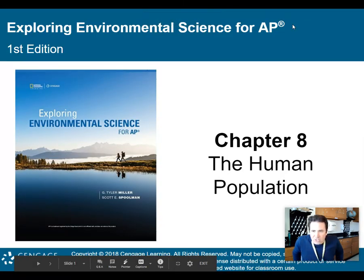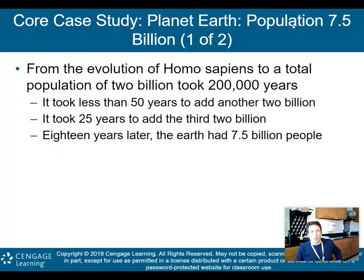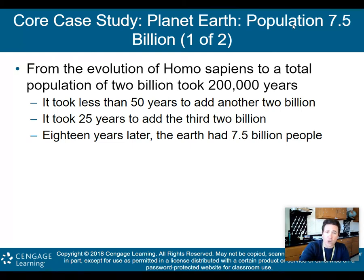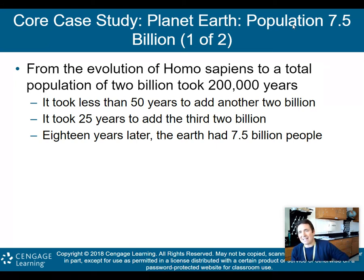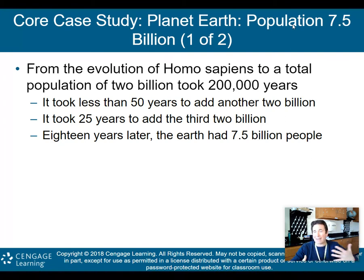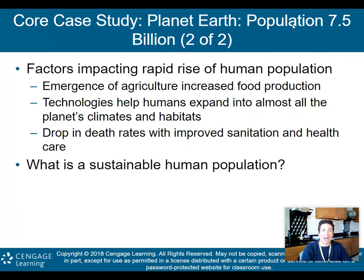From the evolution of Homo sapiens to a total population of 2 billion took about 200,000 years. Then it took less than 50 years to add another 2 billion people, and 25 years to add a third 2 billion. About 20 years later we're now at 7.8 billion and climbing. Early in our history, population didn't grow much — it's been in the last couple of hundred years that we've seen this dramatic increase.